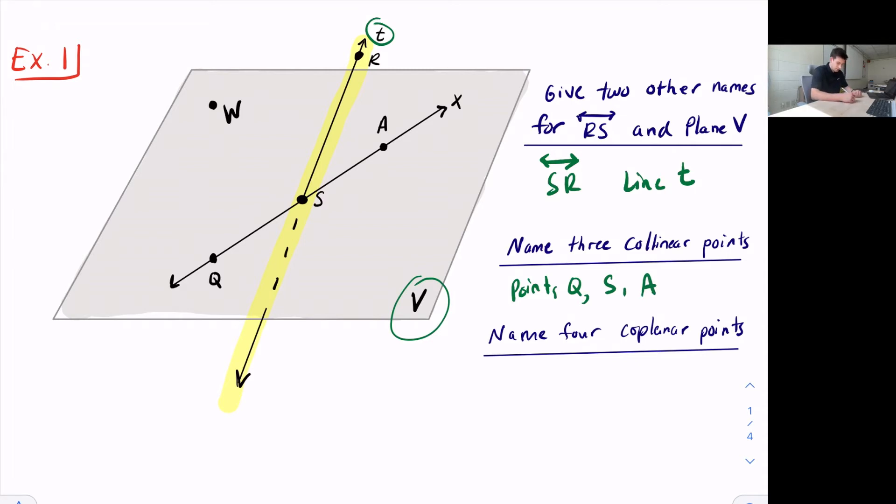And lastly, we want to name four coplanar points. Well, if collinear means on the same line, coplanar means on the same plane. So we want to name four points that are coplanar. So we have point W, Q, S, and A. And those would be our four points that are coplanar.